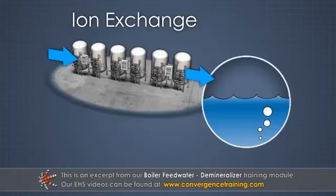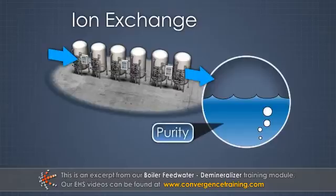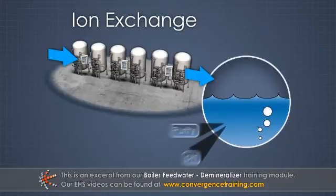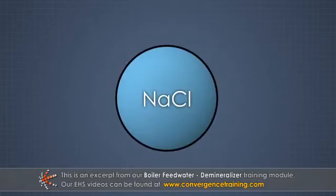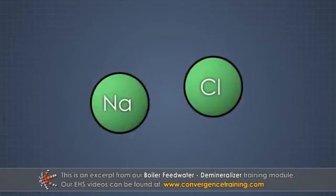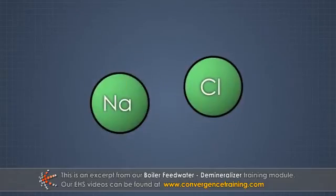Ion exchange is the main process used to control purity and pH of boiler feed water. Ions are atoms or molecules that have split up in water and lost or gained an electron, and have thus acquired an electrical charge.